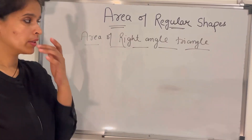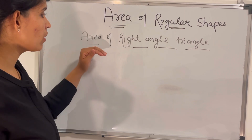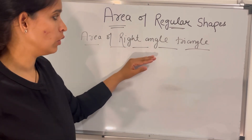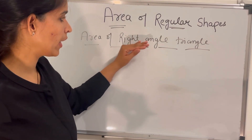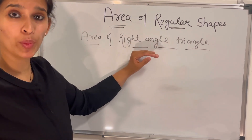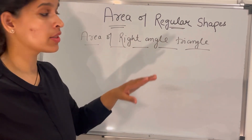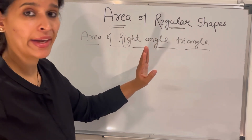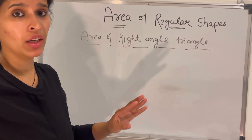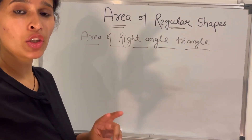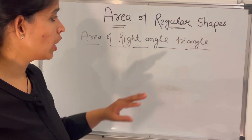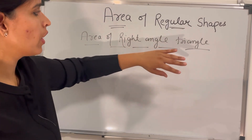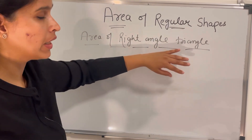Now the next topic is area of right angle triangle. A right angle triangle is one where one angle is 90 degrees and the two shorter sides are equal.